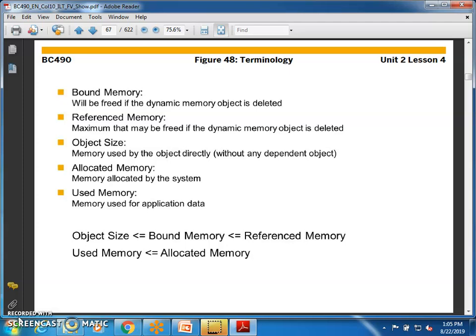Now we have several memory types: bound memory, reference memory, object size memory, allocated memory, and used memory. Bound memory will be freed if the dynamic memory object is deleted — for example, if you delete an internal table or leave a screen without saving. Reference memory is the maximum that may be freed if the dynamic memory object is deleted, with the backend memory also freed. Object size memory is used by the object directly without independent objects — for example, properties of a field name.